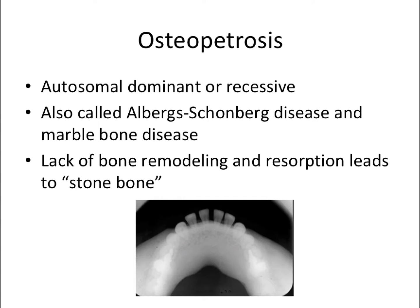Next we have osteopetrosis, also called Albers-Schönberg disease and marble bone disease. It involves a lack of proper bone remodeling and resorption, leading to stone bone — osteopetrosis literally translates to stone bone. It's different from other radiopaque lesions like fibrous dysplasia and condensing osteitis in that the entire bone is affected, not just a localized patch of inflammation.